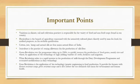Important concluding points: variations in climate, soil, and cultivation practices are responsible for the variety of food and non-food crops found in India. Horticulture is the branch of agriculture concerned with intensively cultured plants directly used by people for food, medicinal purposes, or aesthetic gratification. Cotton, jute, hemp, and natural silk are the four major natural fibres of India. Sericulture is the practice of rearing silkworms for the production of silk fiber.